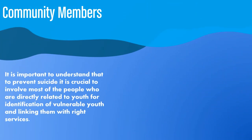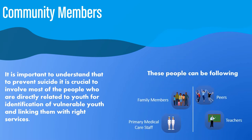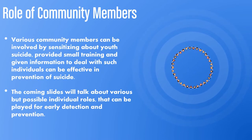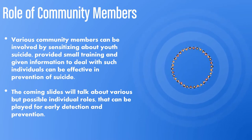It is important to understand that to prevent suicide, it is crucial to involve most of the people who are directly related to youth for identification of vulnerable young adults and linking them with right services. These people can be family members, peers, primary medical care staff, and teachers. Various community members can be involved by sensitizing about youth suicide, providing small training, and giving information to deal with such individuals, which can be effective in prevention of suicide.